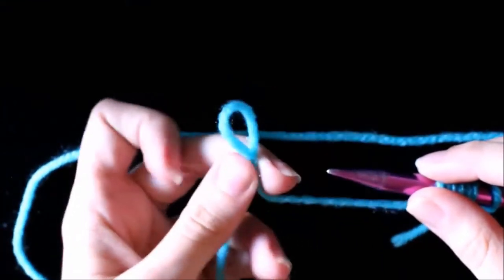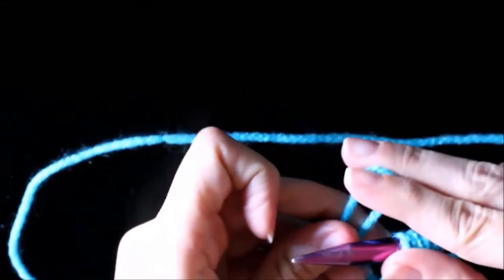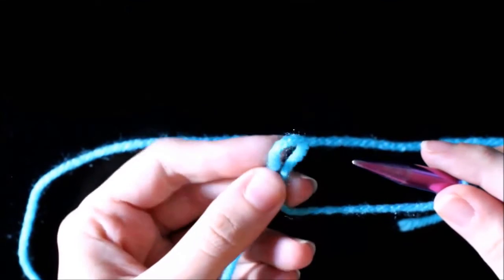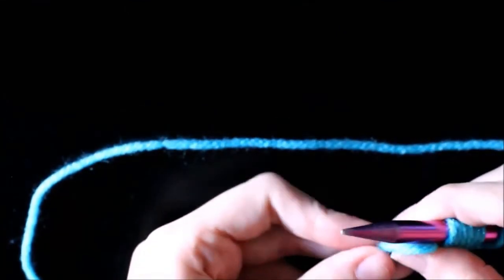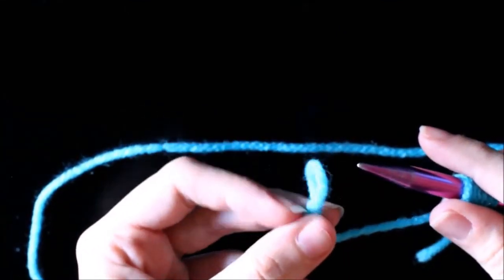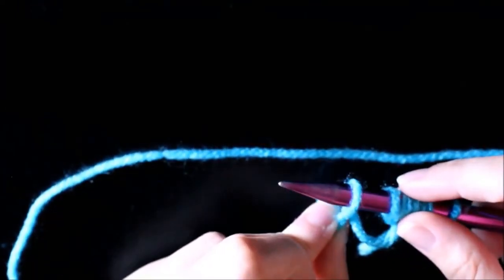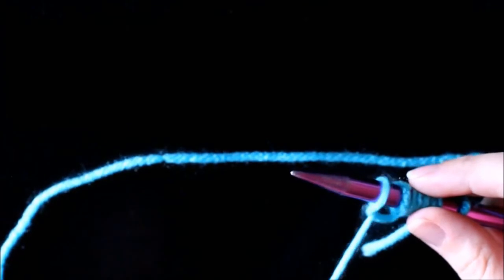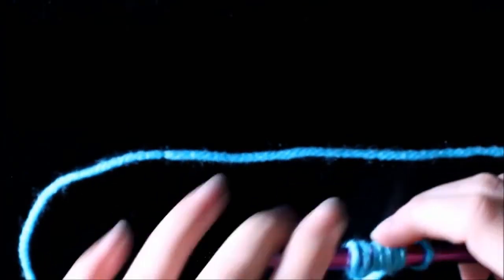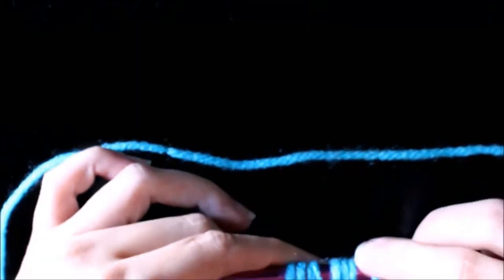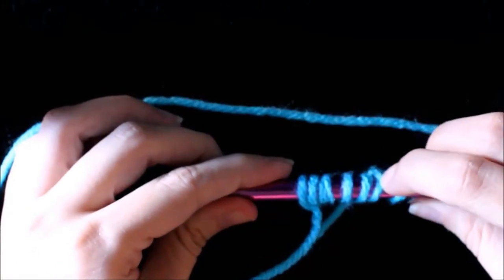It's just a simpler way if you are new to it and you're not getting used to the other way yet. So create a loop, twist it, insert your needle, and pull. There you go. So now you have two ways to create the same cast on that you can start practicing on.